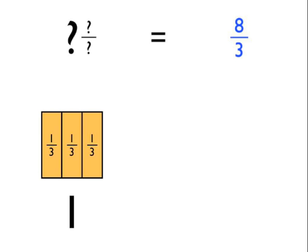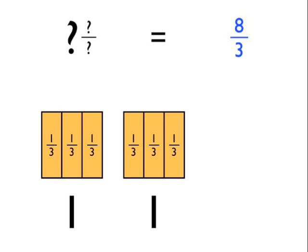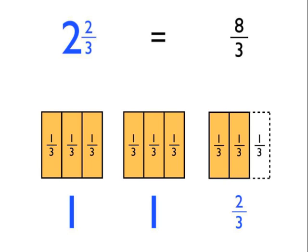So let's put a second group of three in, as you can see here. Now we've got two whole squares — I've got two sets of three thirds, so in total I've got six thirds. But I want eight thirds in total, so I need another two thirds to give me what I'm after.